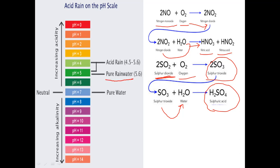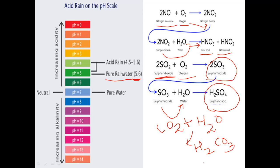Normally, rainwater is slightly acidic and has a pH of 5.6. You might wonder why — it is because carbon dioxide is naturally present in the atmosphere, and this carbon dioxide reacts with water vapour to form carbonic acid (H₂CO₃). That is why pure rainwater is slightly acidic with a pH of 5.6.